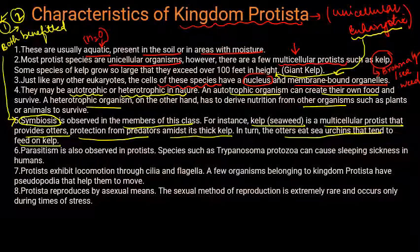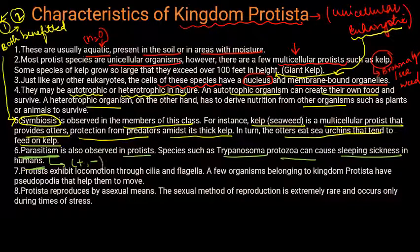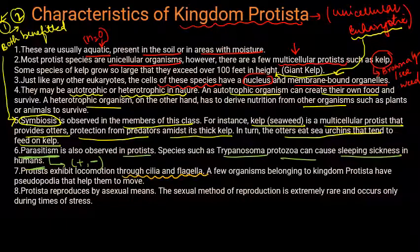Parasitism is also observed in Protista. Species such as Trypanosoma protozoa can cause sleeping sickness in humans — this is a parasitic relationship where one organism is benefited and the other is harmed. Protists also exhibit locomotion through cilia and flagella.